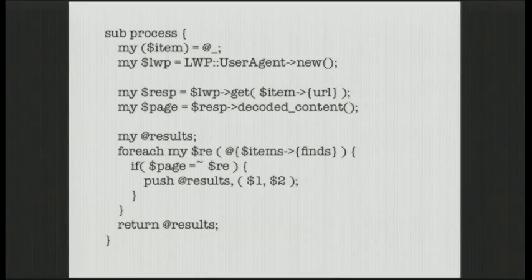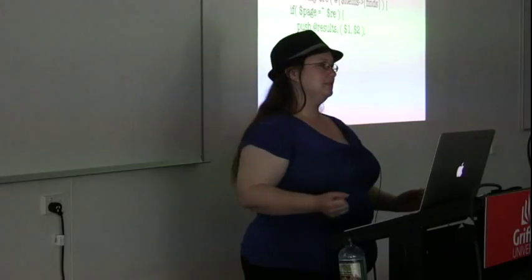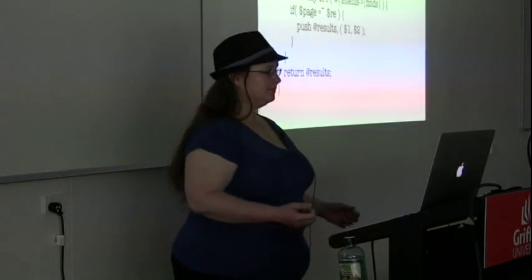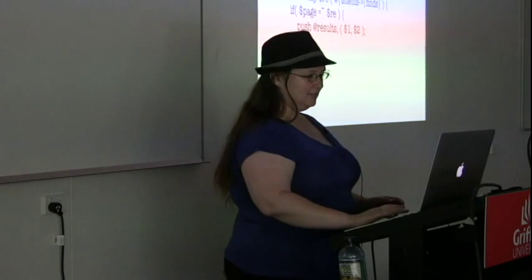Here's an example of what your expensive process thing might be. We take our item, we fetch the URL - there would be error handling in here, just pretend it's there for simplicity. Then we're looking for a certain match of regular expressions - does this regular expression match that page? If so, keep the first two things captured in the parentheses. It's interesting to determine what would be most expensive here. Without knowing our data, we can't say whether the regex or the network lag will dominate - we need to know more about our data.